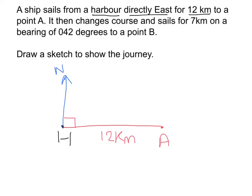The ship then changes course and sails for 7 kilometres on a bearing of 042 degrees to a point B. Now at A, we draw in the north line, because every time we look at a bearing we measure it clockwise from north. 42 degrees is less than 45, and 45 is roughly a diagonal line halfway between 0 and 90, so we estimate the direction accordingly — a little shorter since it's only 7 kilometres — to point B. That angle of 42 degrees is measured clockwise from the north line.